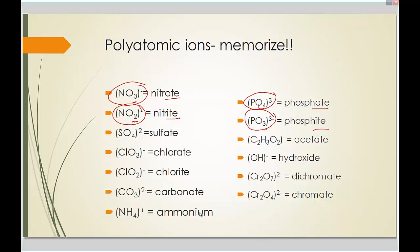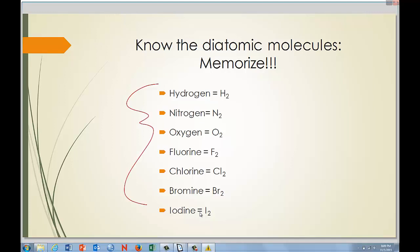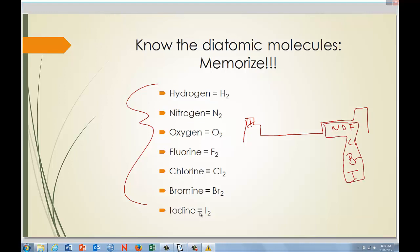Something else to memorize are the diatomic molecules — there are seven of them. If you look at the periodic table, you have hydrogen, nitrogen, oxygen, fluorine, chlorine, bromine, and iodine. Notice they kind of make the number seven if you outline them on the periodic table — that's one way to remember what those elements are.